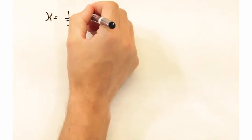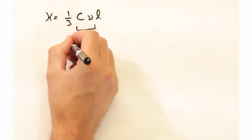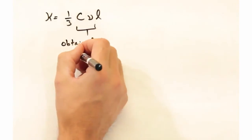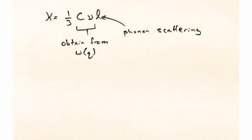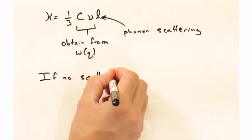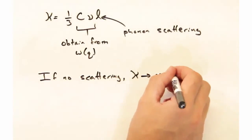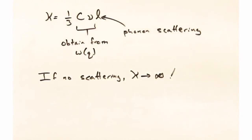Denoting thermal conductivity as kappa, we see that two of the terms we can directly get from the dispersion, the heat capacity and the velocity. However, this l term is kind of a big mystery right now. The first thing you can see is that if you don't have any scattering, then your thermal conductivity goes to infinity. So, scattering must be present in all materials.